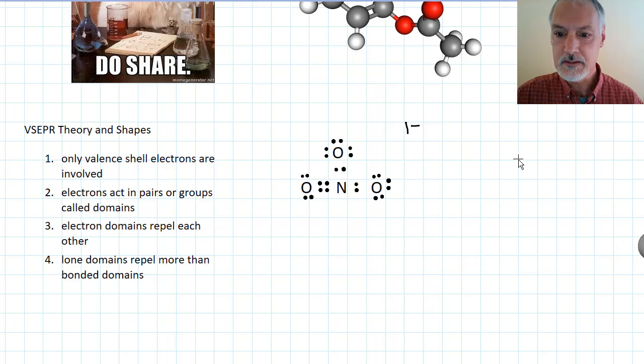This here is what we call the nitrate molecule and we should, of course, put little square brackets around that. Now, we're only interested in the valence electrons, hence these diagrams, when they're drawn, only use the valence electrons.